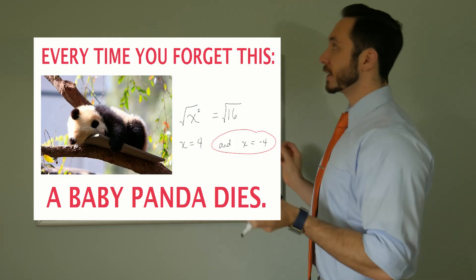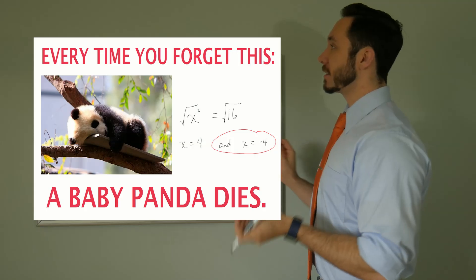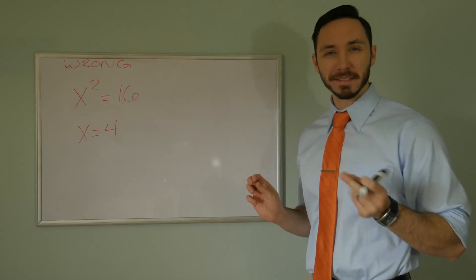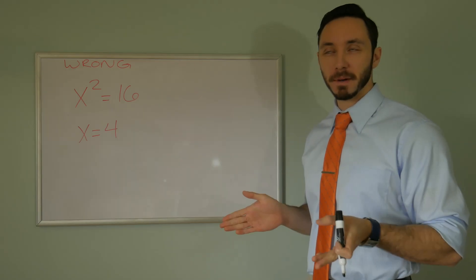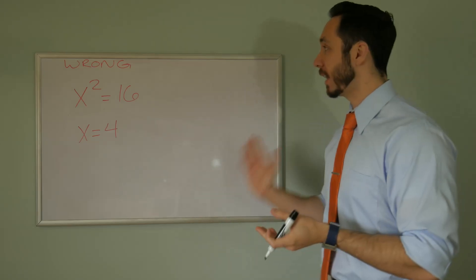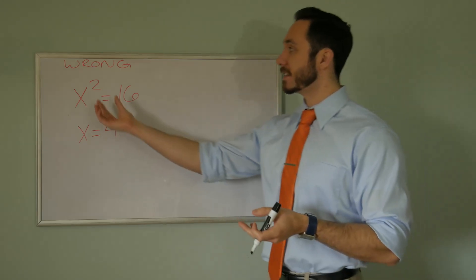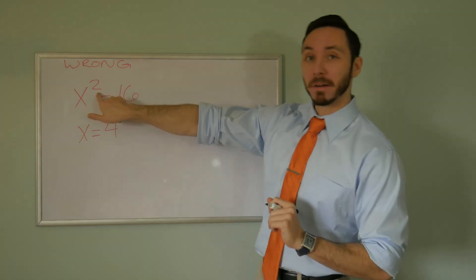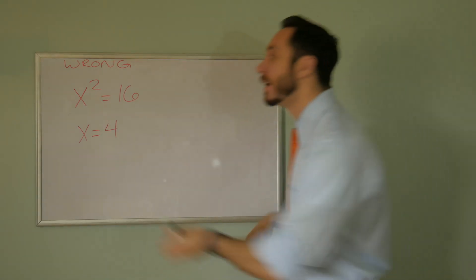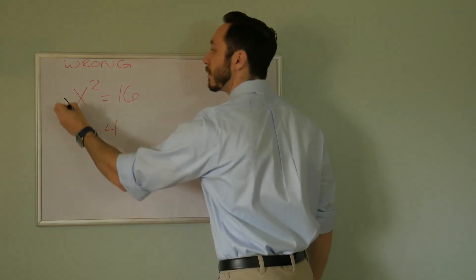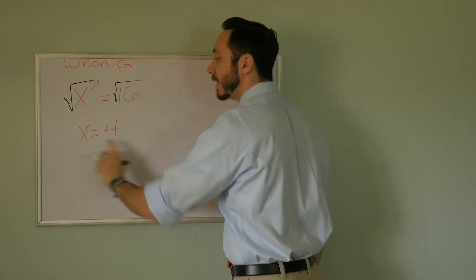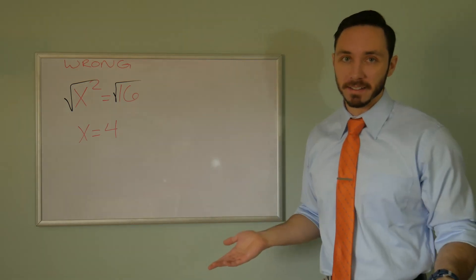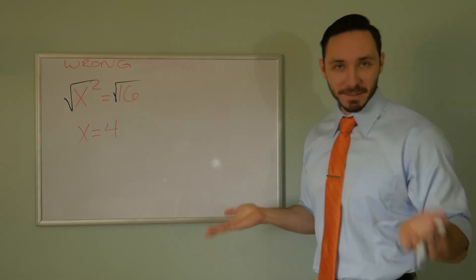Every time you forget this, a baby panda dies. This is a very common mistake. What a lot of kids do is they see the square and say, I know how to get rid of this square — I take the square root. They take the square root on both sides, and they say x is equal to four, and then they only get half credit. What did they do wrong?